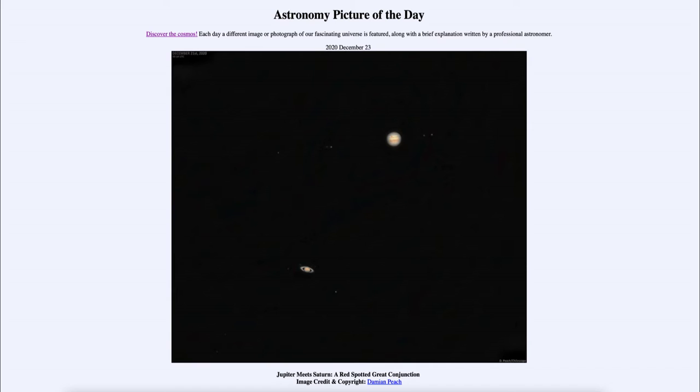Today's picture for December 23rd of 2020 is titled Jupiter meets Saturn, a red spotted great conjunction. So what do we see here? We see in the image Jupiter and Saturn, Jupiter towards the upper right and Saturn down towards the lower left. This was the great conjunction that occurred just a couple of days ago when Jupiter and Saturn were at their closest, about a tenth of a degree apart.